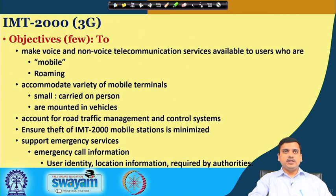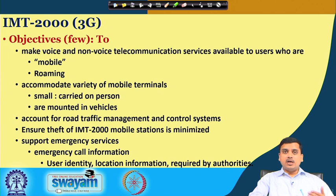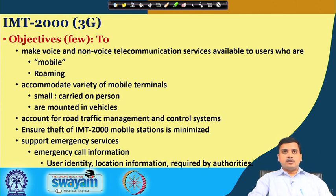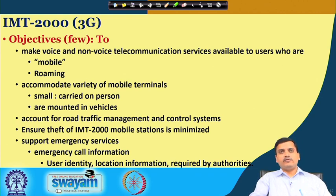IMT-2000, the 3G standard, had a set of objectives. One objective was to make voice and non-voice telecommunication services available to mobile and roaming users. Compared to the GSM requirement of converting analog to digital communication with a single European standard, IMT-2000 required supporting both voice and non-voice services — a significantly different starting perspective that changes the entire system design approach. This is the starting point of developing a new technology.